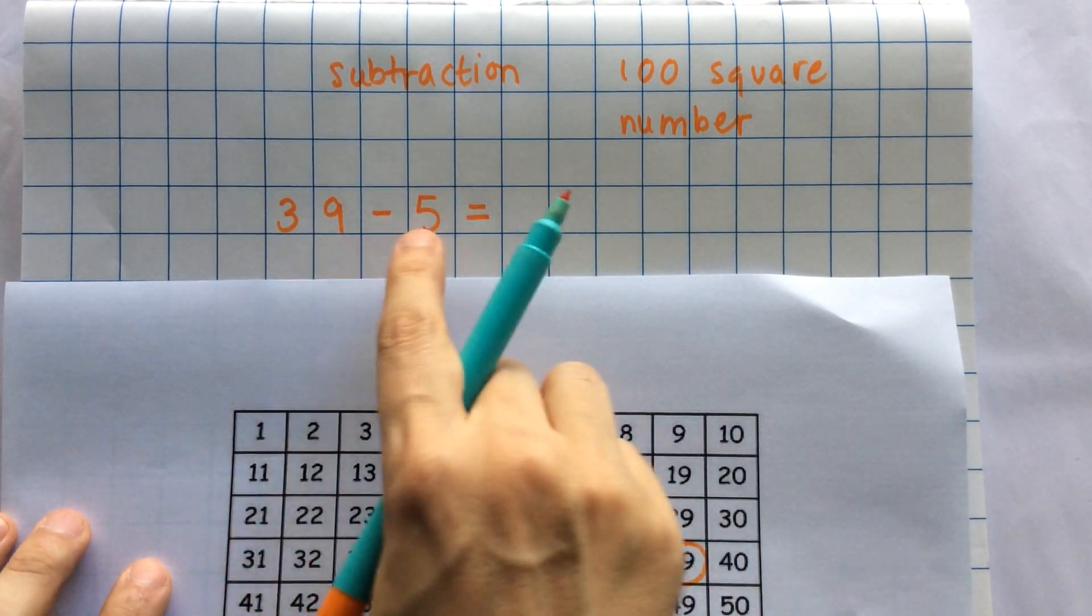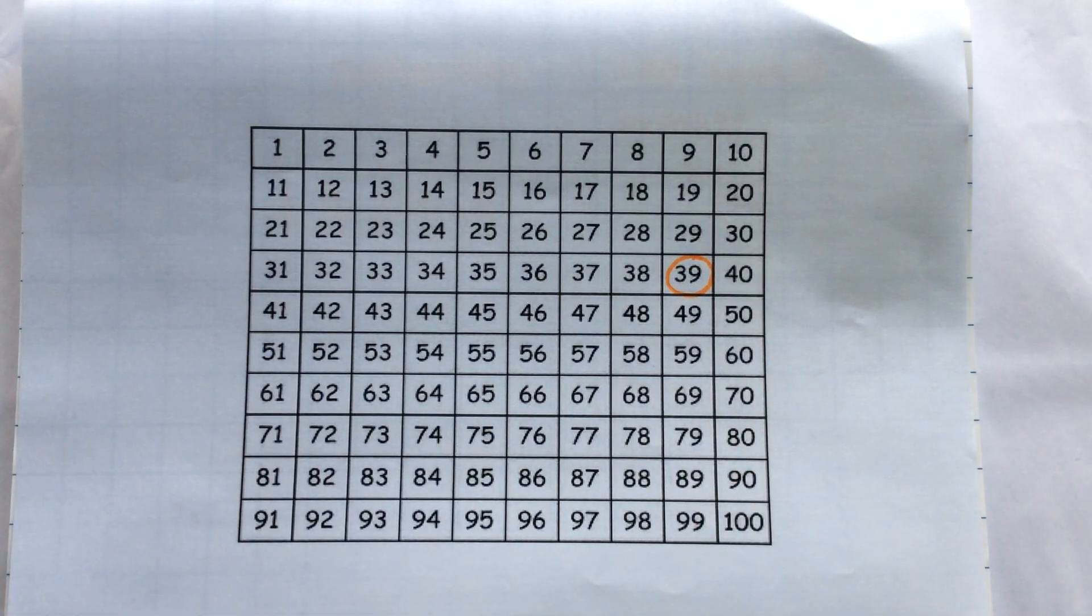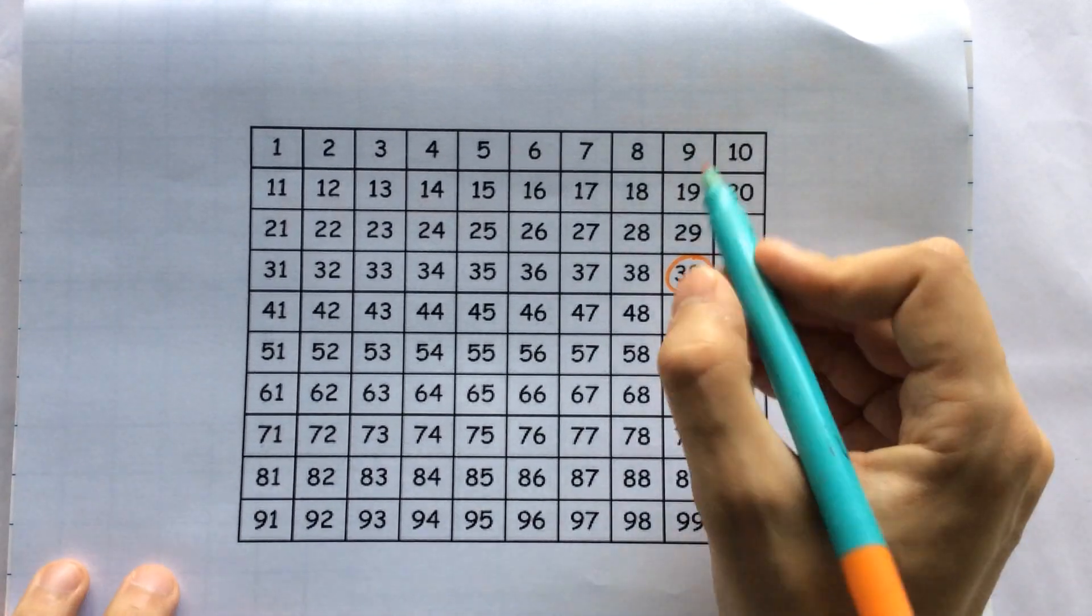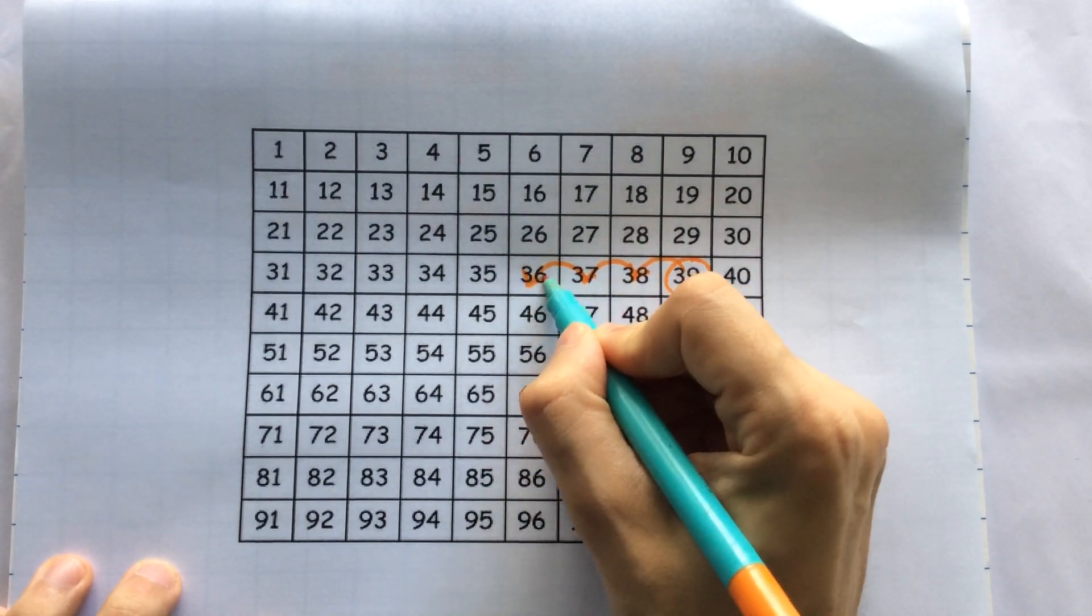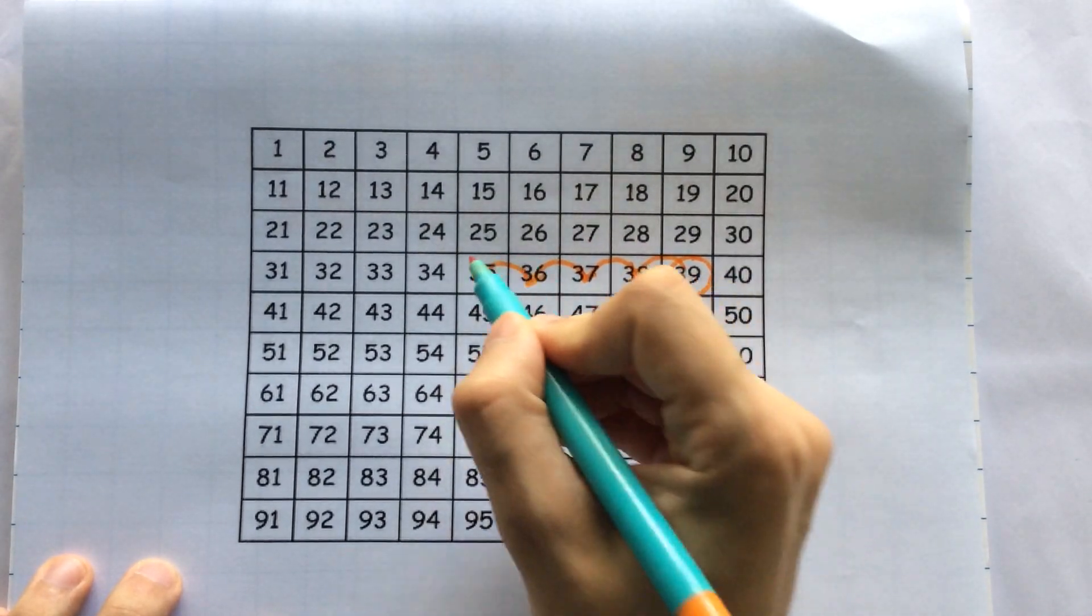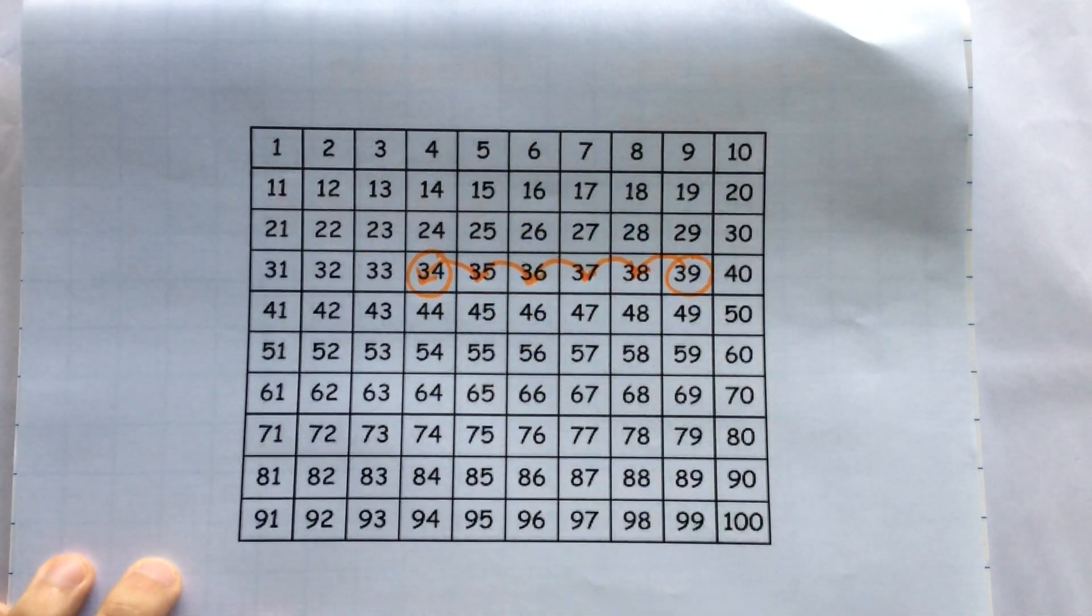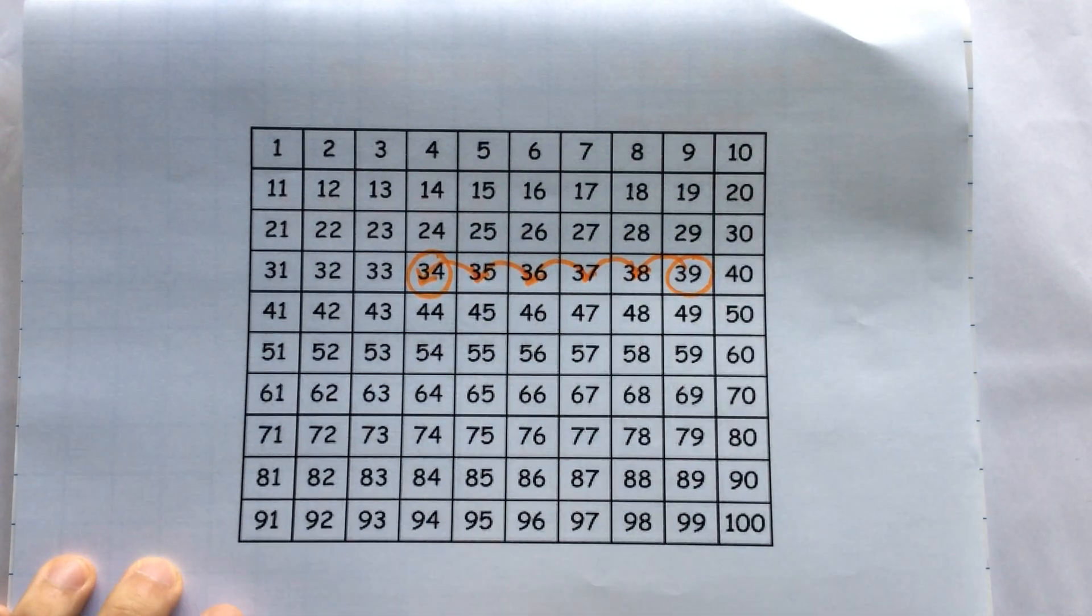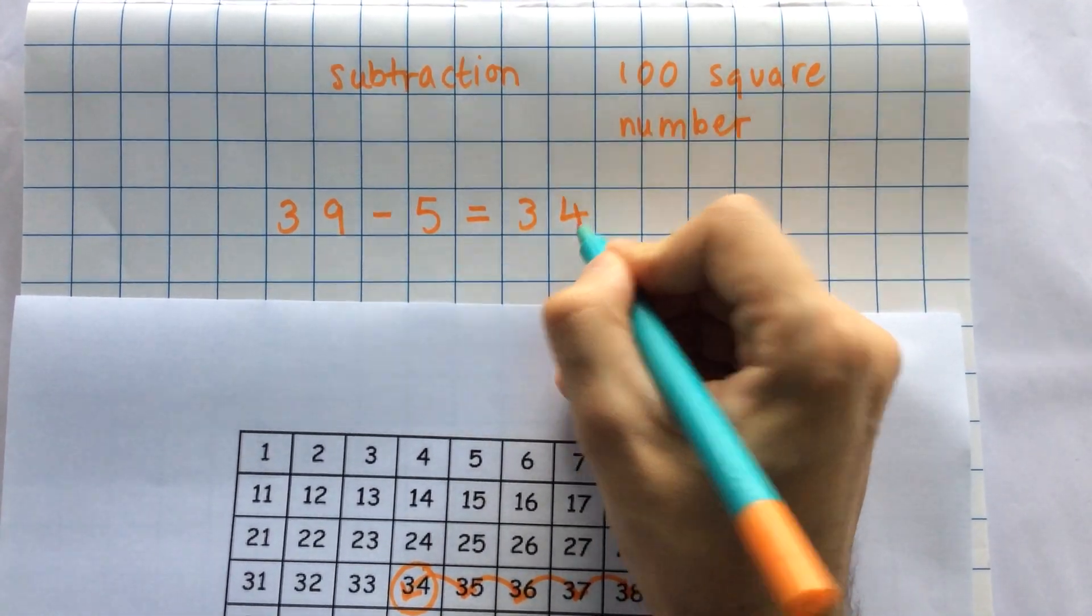My problem is 39 minus 5 so I need to jump back 5 times. I need to make sure I count the jumps and not the numbers. 1, 2, 3, 4, 5 and I can circle my last jump which is 34. 39 minus 5 is 34.